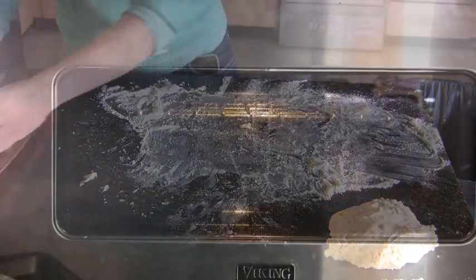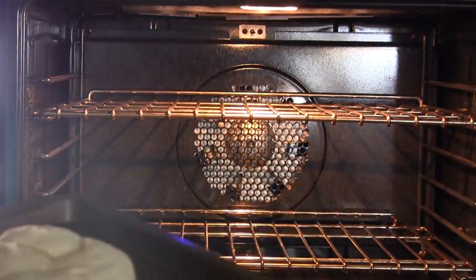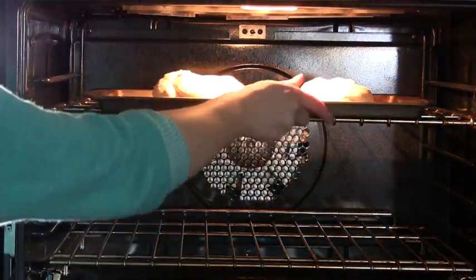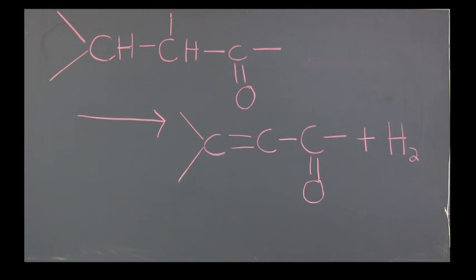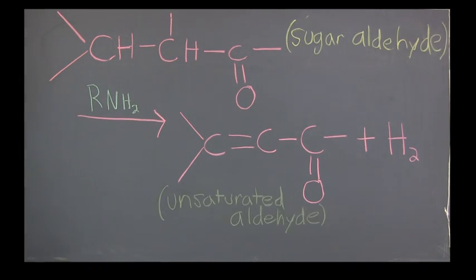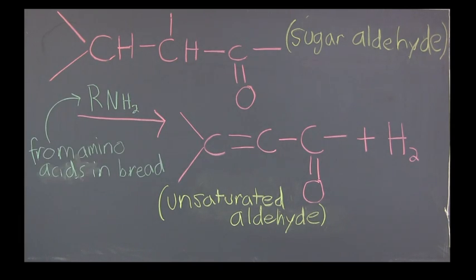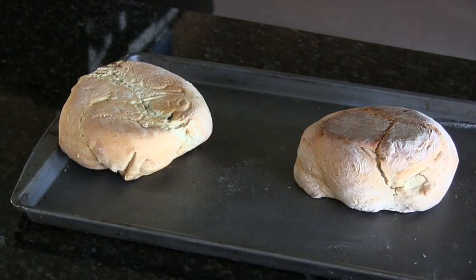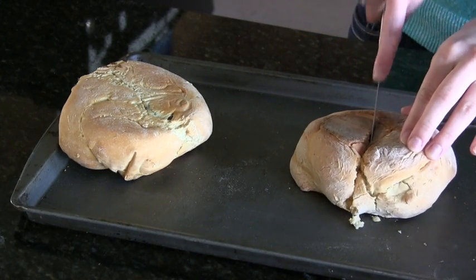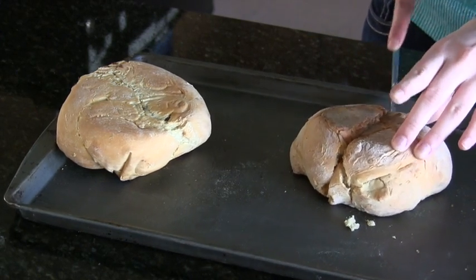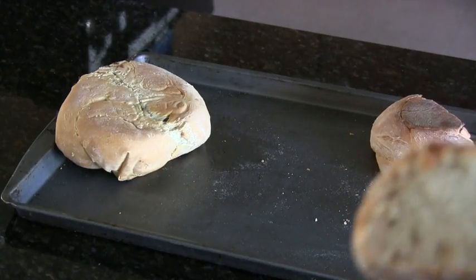Once we have a full tray of loaves, we're ready to bake. As I mentioned earlier, the sugar in the bread goes through several reactions at high temperatures called Maillard reactions that produce the brown crust. There are many of these reactions, but they are approximated by the reaction on screen — the conversion of a sugar aldehyde to an unsaturated aldehyde with help from the amino acids in bread. After about a half an hour of baking, the bread is finished. You can see the little bubbles and pockets left by the CO2 gas and the golden brown crust from the Maillard reactions.